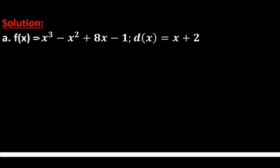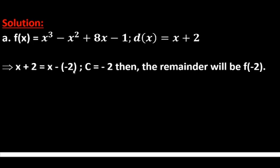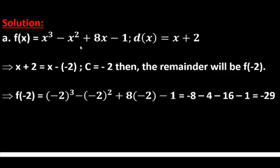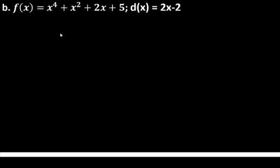When we divide the given polynomial function by x+2, the remainder is the value of the function at -2, because x+2 = x - (-2), so c = -2. Finding f(-2): f(-2) = (-2)³ - (-2)² + 8(-2) - 1 = -8 - 4 - 16 - 1 = -29. So the remainder is -29. You can verify this using synthetic division.